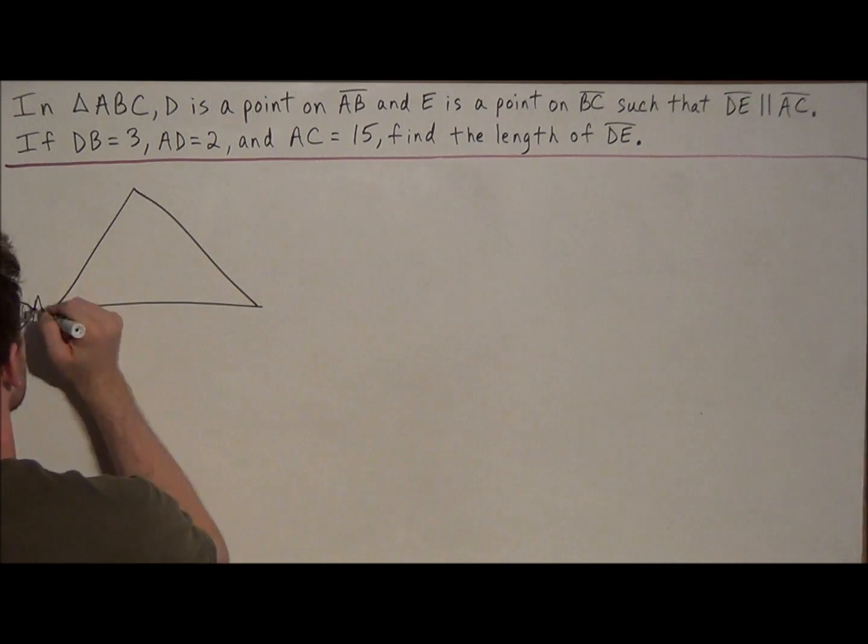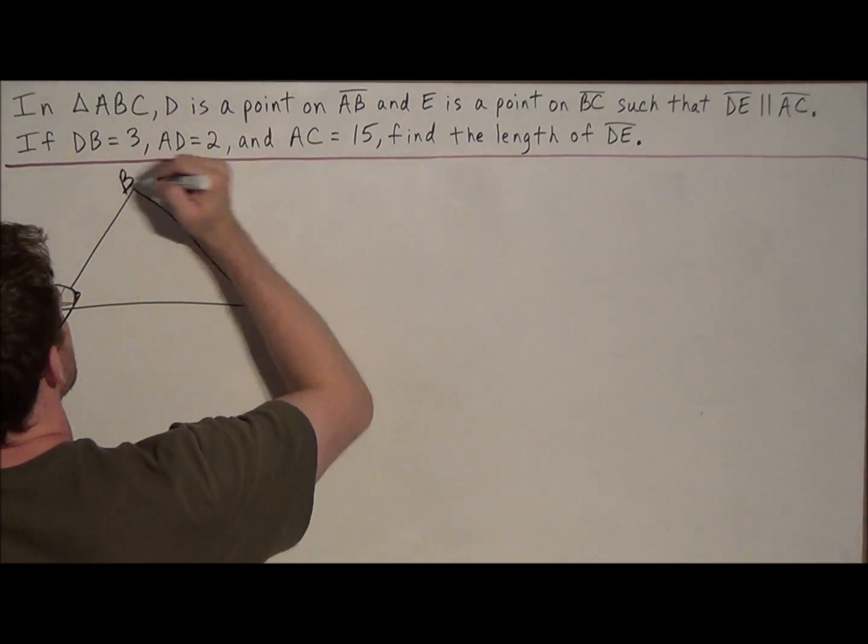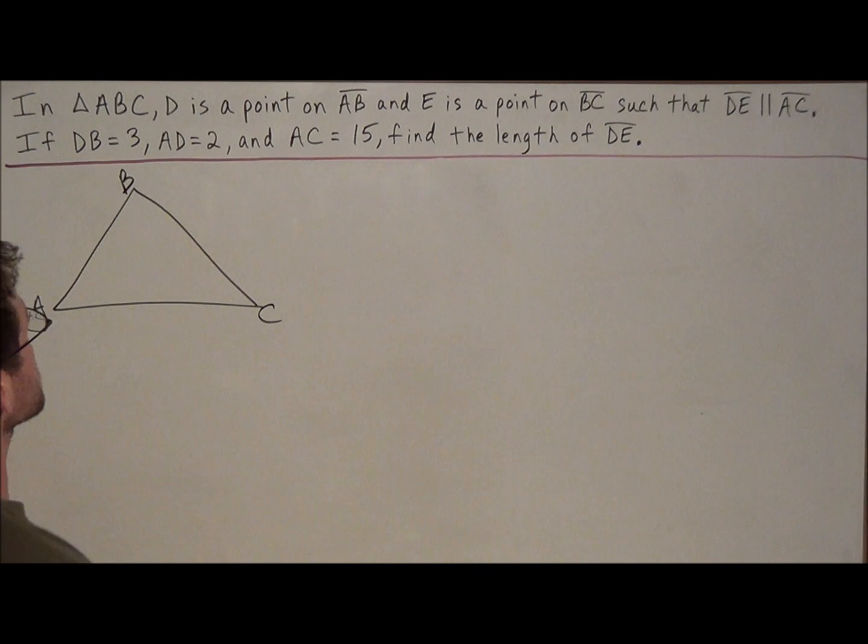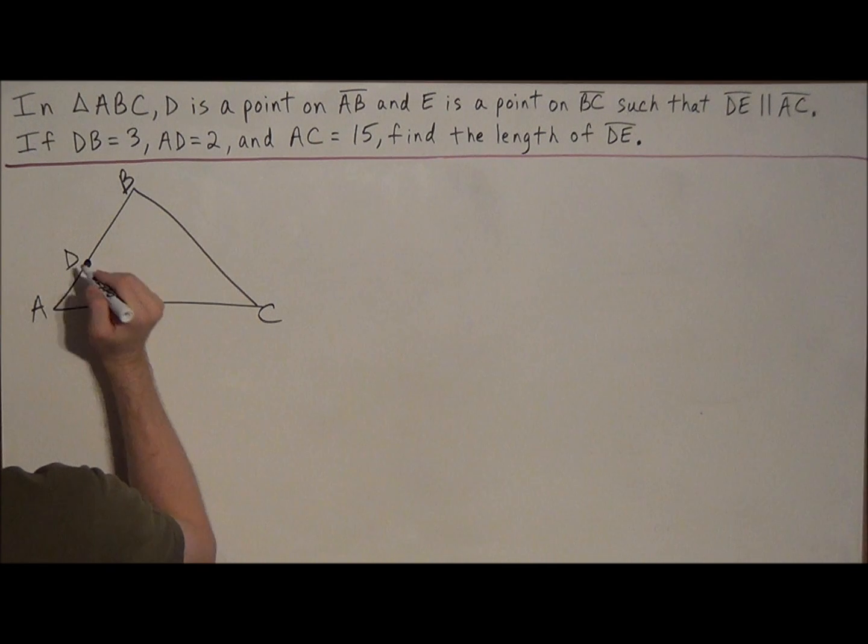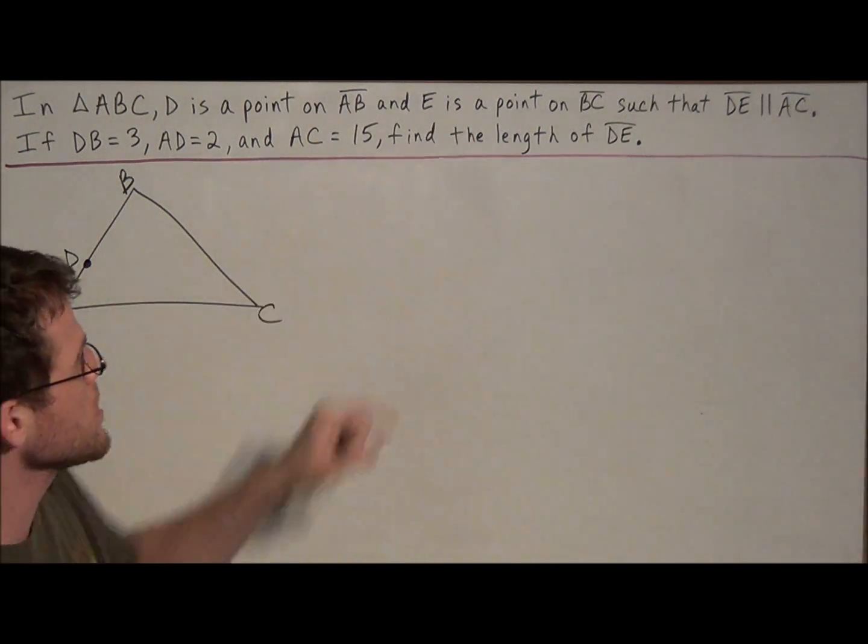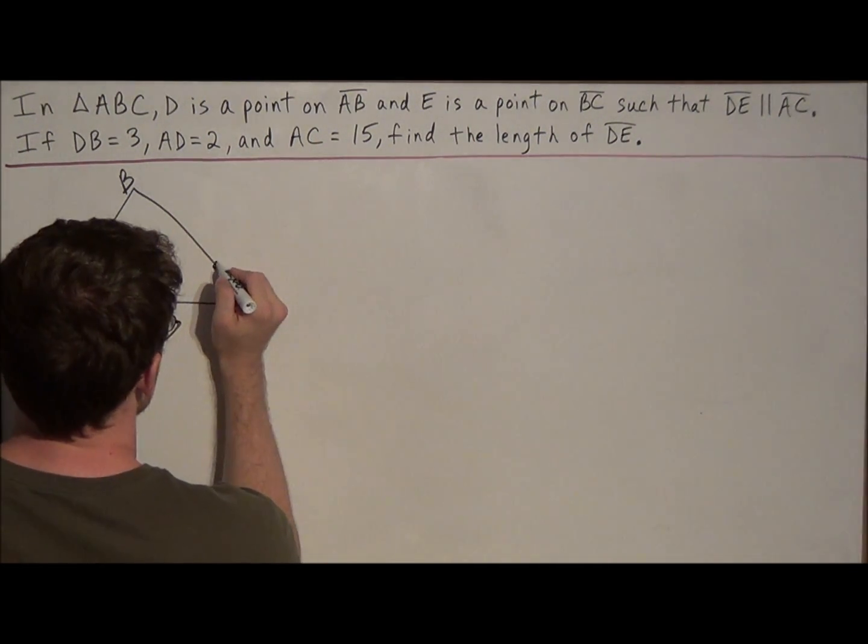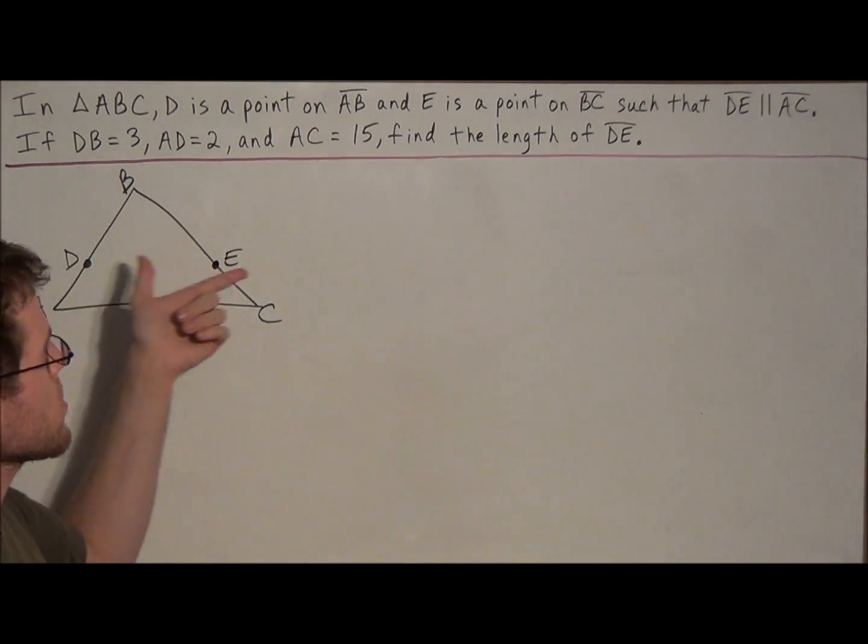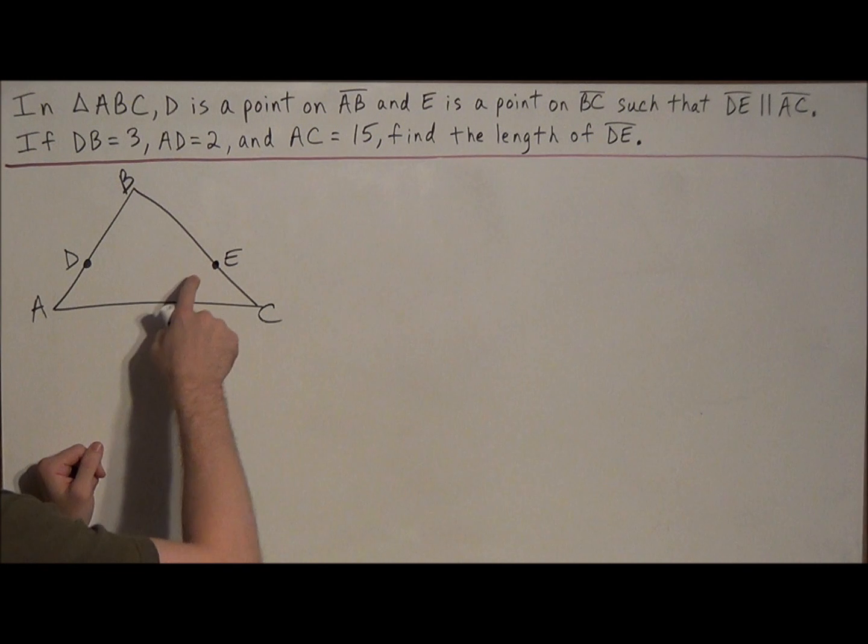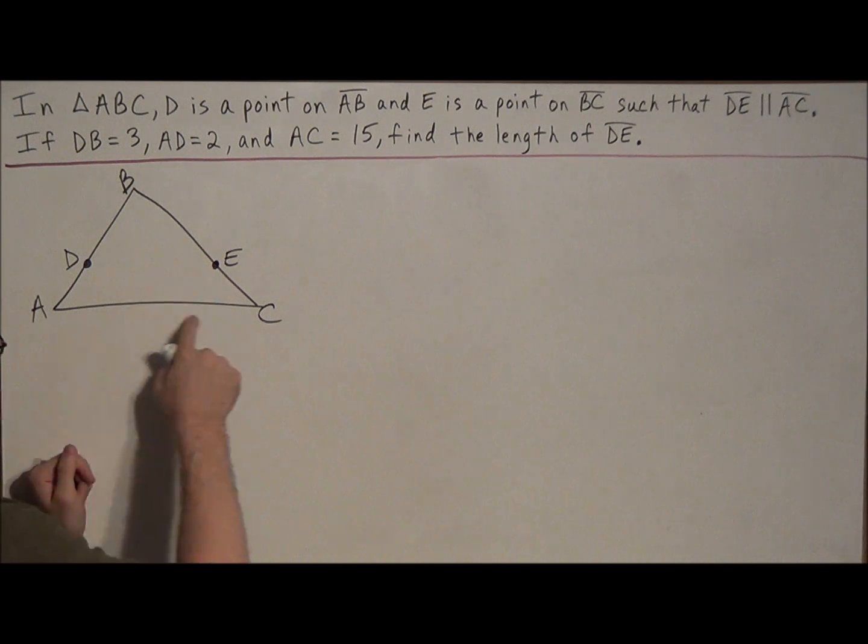So we start off, we have triangle ABC, and now we just read through the problem again. We have D as a point on AB, so we go to line segment AB and we can draw in point D, and we have that E as a point on BC. But now these points need to be drawn in such a way that when we connect DE, DE needs to be parallel to AC.